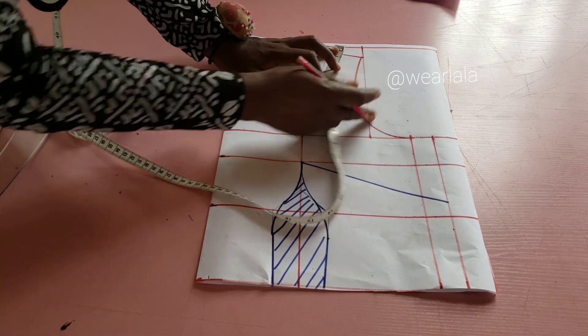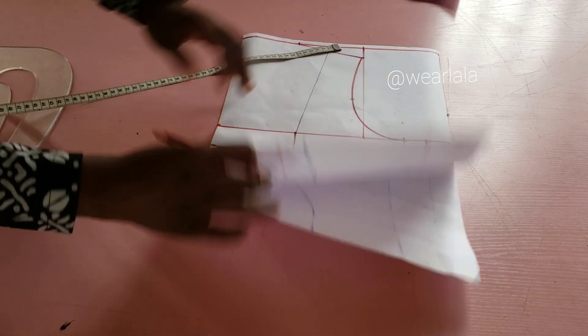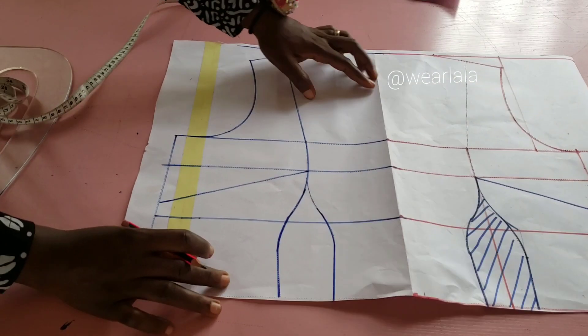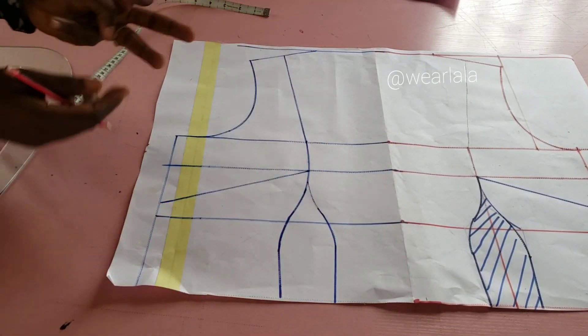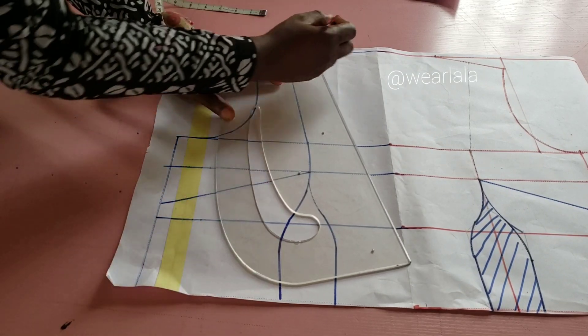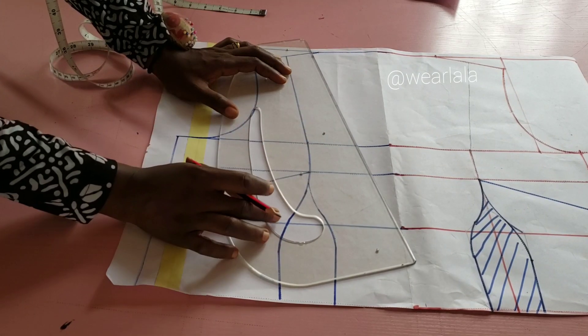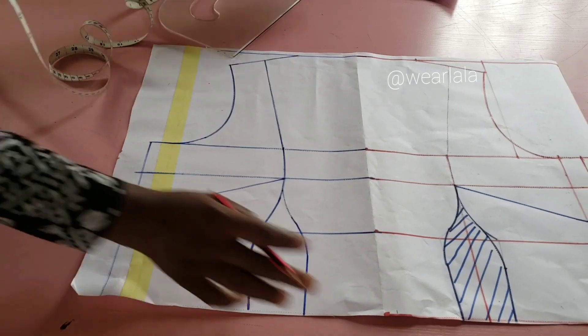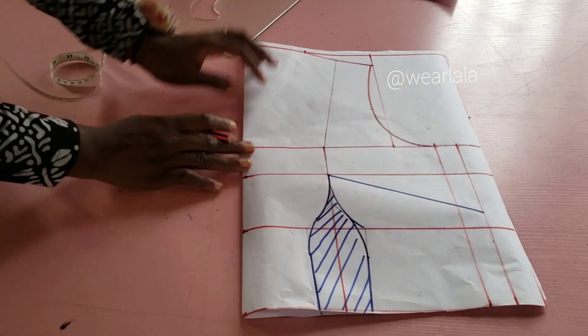Now I'm going to use my ruler to link the neckline from the shoulder part here to where I want the insert to stop on the waistline.